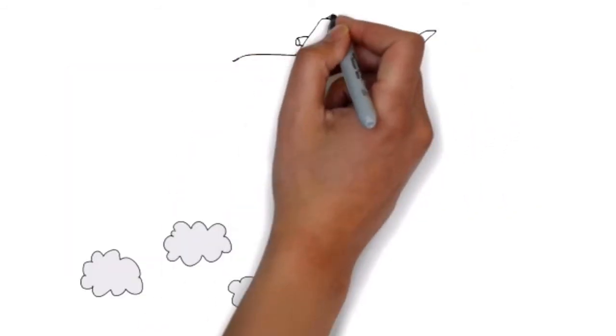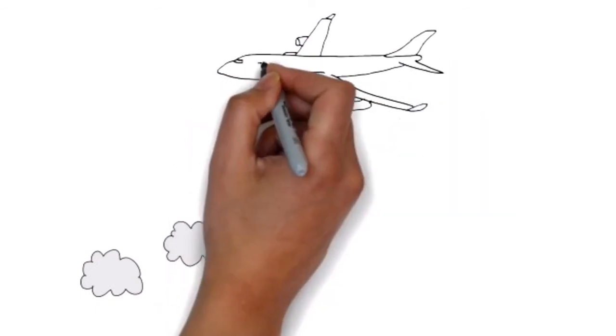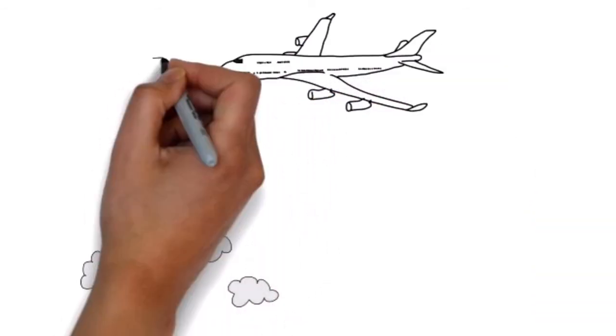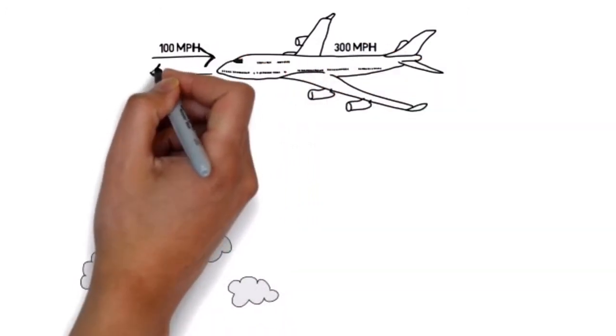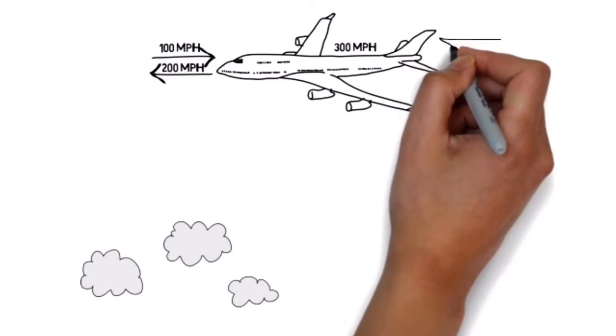Planes will often face strong headwinds that can dramatically reduce the speed at which the plane is flying. For example, 100 mile per hour headwinds can cause a plane flying at 300 miles per hour to travel closer to 200 miles per hour.